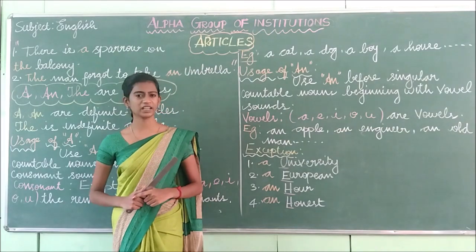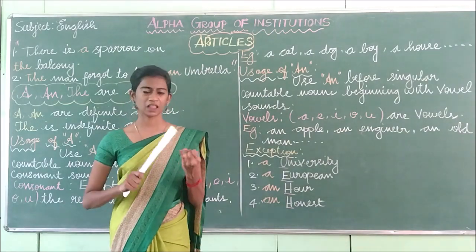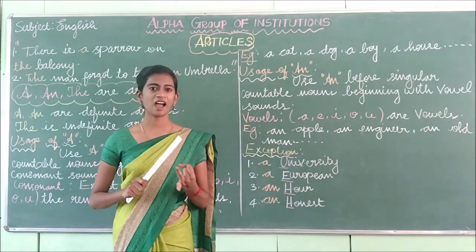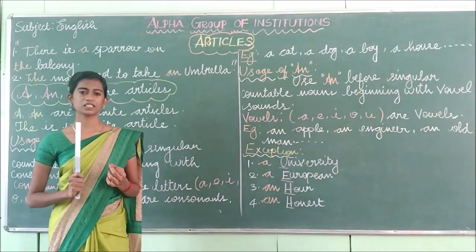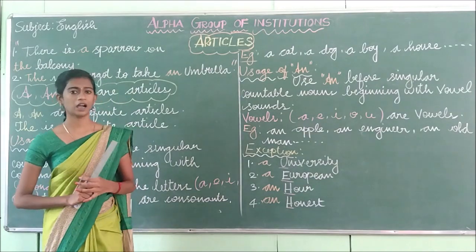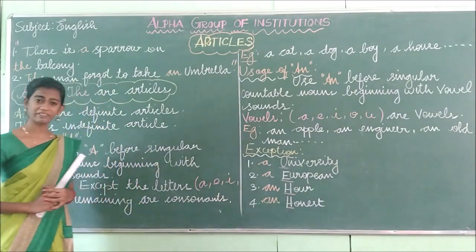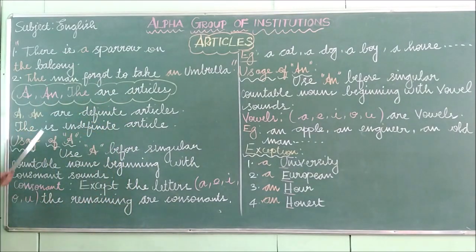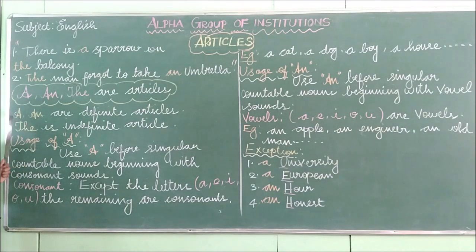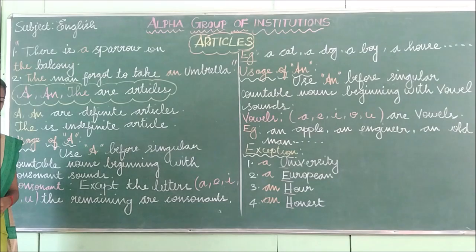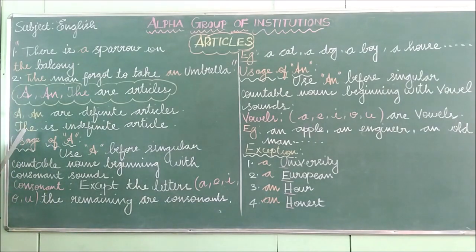There are three articles. What are they? 'A', 'an', and 'the'. So how many indefinite articles are there? There are two indefinite articles and they are 'a' and 'an'. And there is one definite article, and it is 'the'.